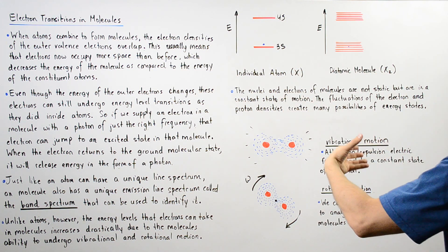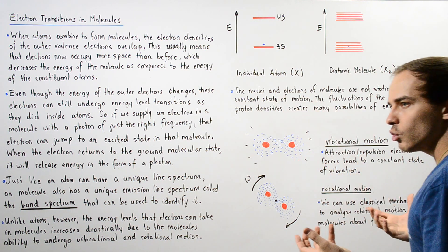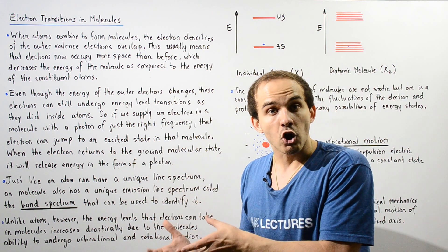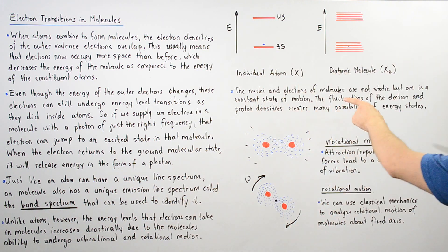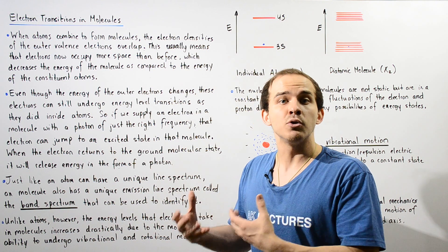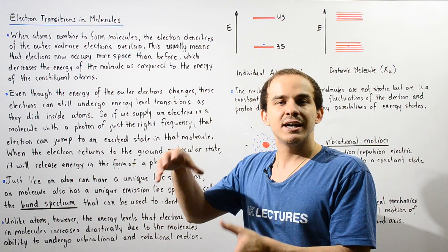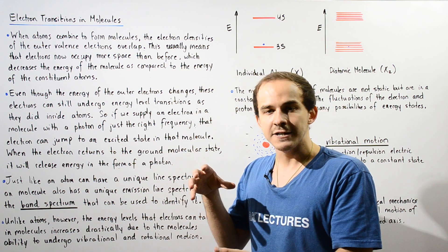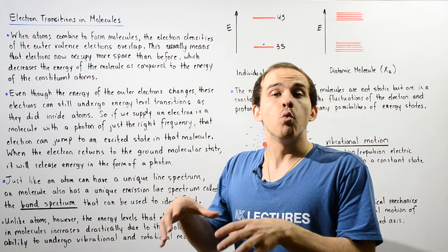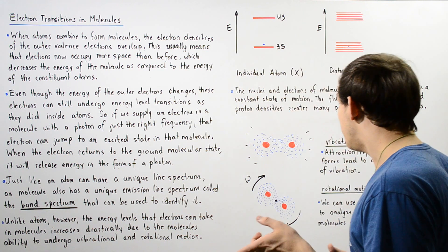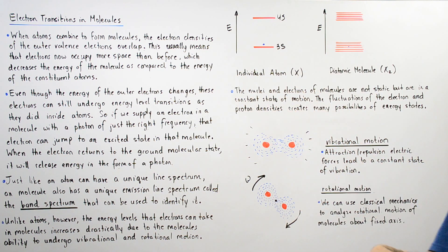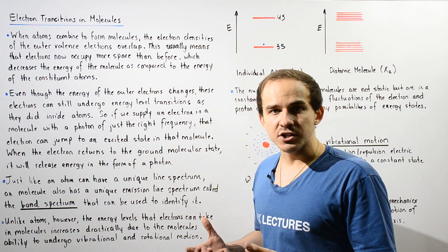So the nuclei and electrons of molecules are not exactly stationary—in fact, they are always in constant motion. These fluctuations of the electron and proton probability densities mean that the energy of the protons or electrons will change. So basically, we have vibrational and rotational motion within our molecules.